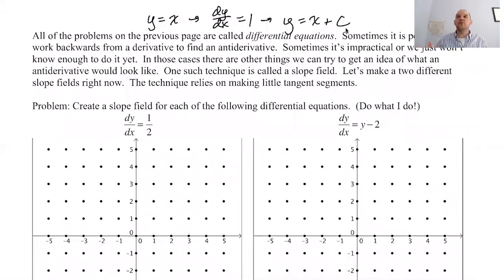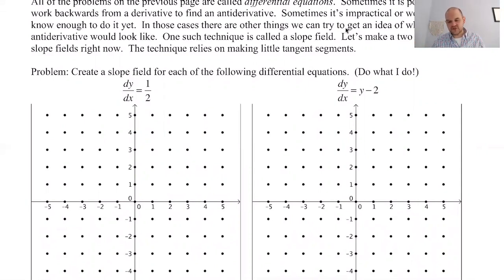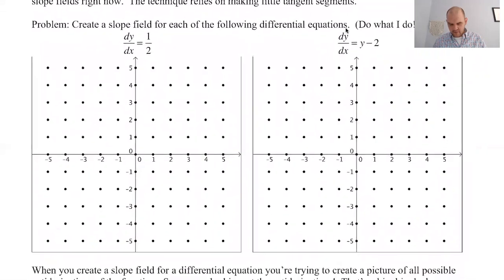Sometimes it's hard or impractical to actually solve the equation. What we have at our disposal is something called the slope field. The slope field is a very interesting thing, and later in the year you're going to spend a lot of time making them, analyzing them, looking at them. We're going to create two now that are just a little easier to create, and we're going to look at them and get a feel for it. This is very much a preview of things for later in the year.